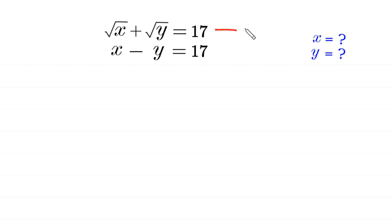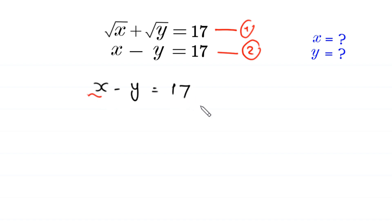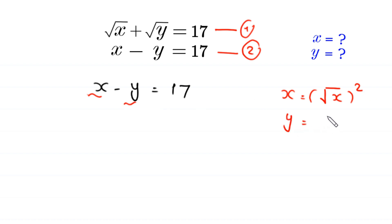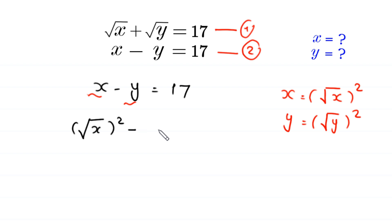Let us call the first equation equation 1 and the second equation equation 2. Now, equation 2 is x minus y equals 17. We can write x as the square root of x squared, and y as the square root of y squared. So this equation becomes: square root of x squared minus square root of y squared is equal to 17.